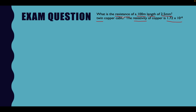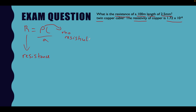I've labeled the values so I can see — what formula do I know that includes resistance, resistivity, length, and cross-sectional area? This is the formula: resistance is equal to the resistivity multiplied by the length divided by the cross-sectional area. R represents resistance, ρ (rho) is the Greek symbol for resistivity, L represents the length of the cable, and A is the CSA — the cross-sectional area. In our question, the CSA is 2.5 millimeters squared.